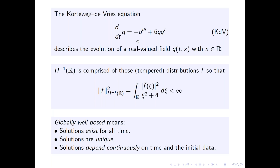Let's start with the Korteweg-de Vries equation. It models long waves in shallow channels of water and takes a simple form: the time derivative of q equals minus three spatial derivatives of q plus six q q prime, where prime stands for the derivative with respect to space. This describes the evolution of a real-valued function of time and space, with x on the real line, though some results also apply to the periodic KdV with x on the unit circle.